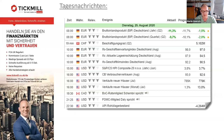Dann haben wir heute um 16 Uhr, ganz wichtig, CB-Verbrauchervertrauen und Verkäufe neuer Häuser. Die Housing-Zahlen, die waren zuletzt hervorragend in Amerika. Genauso wie es an den Aktienmärkten boomt, genauso boomt es im Moment an den Immobilienmärkten. Wir haben eine sehr hohe Arbeitslosigkeit in den USA, viel Angst, aber anscheinend gibt es immer noch mehr als genug Geld. Die Hauspreise sind auf Rekordniveaus, die Anzahl der verkauften Häuser ist extrem hoch – sowohl neue als auch bestehende. Da haben wir auch Rekordzahlen gesehen.